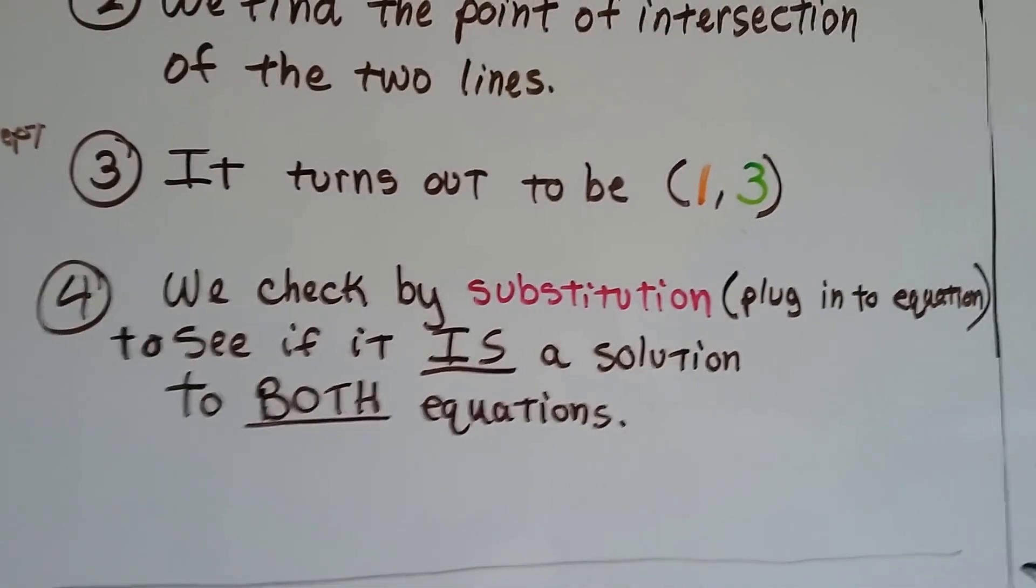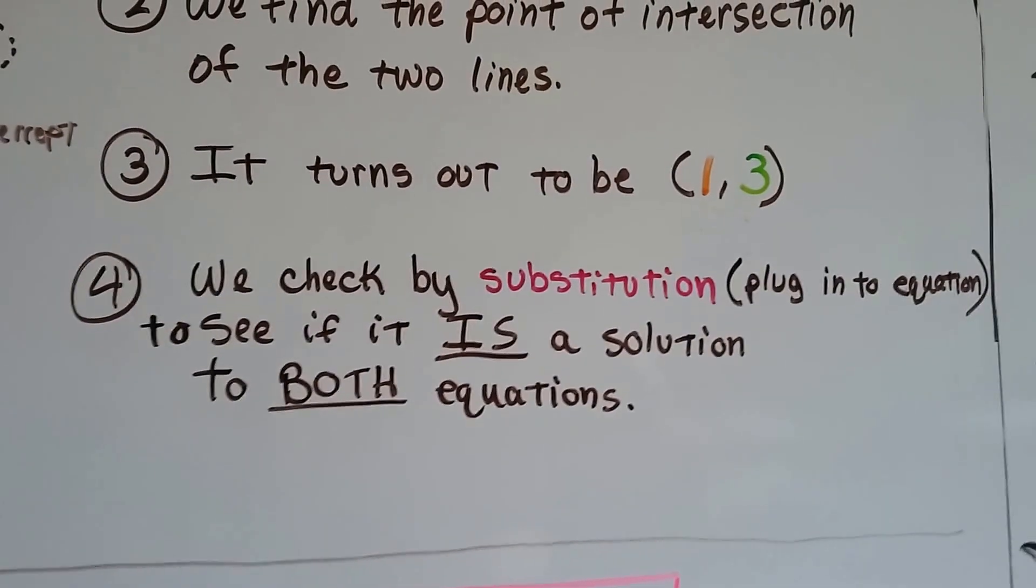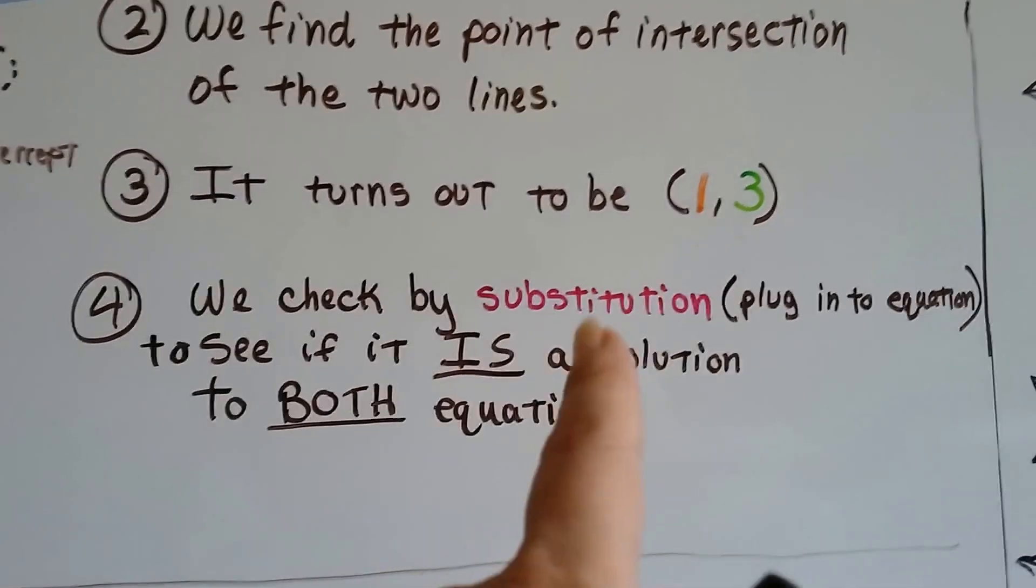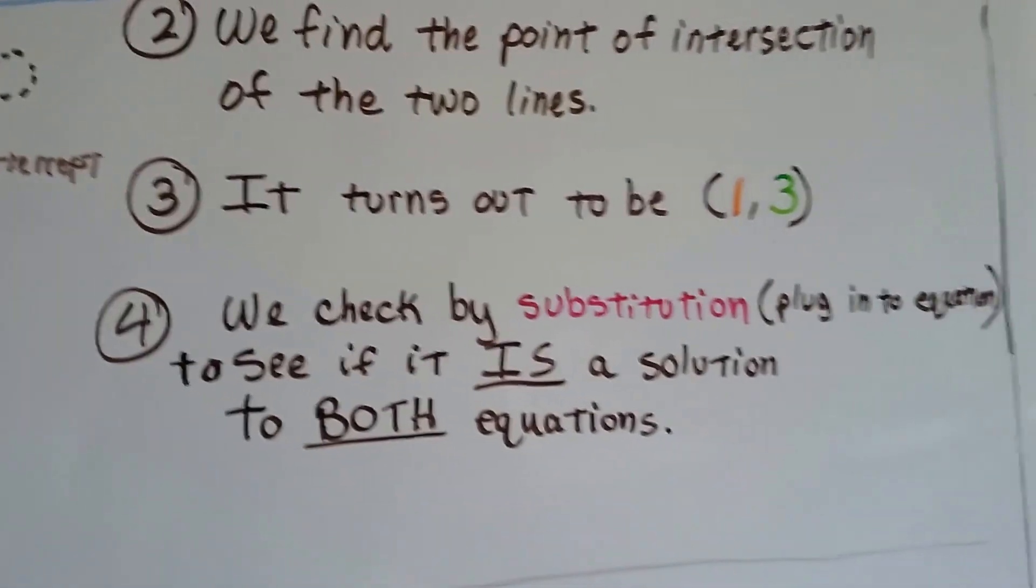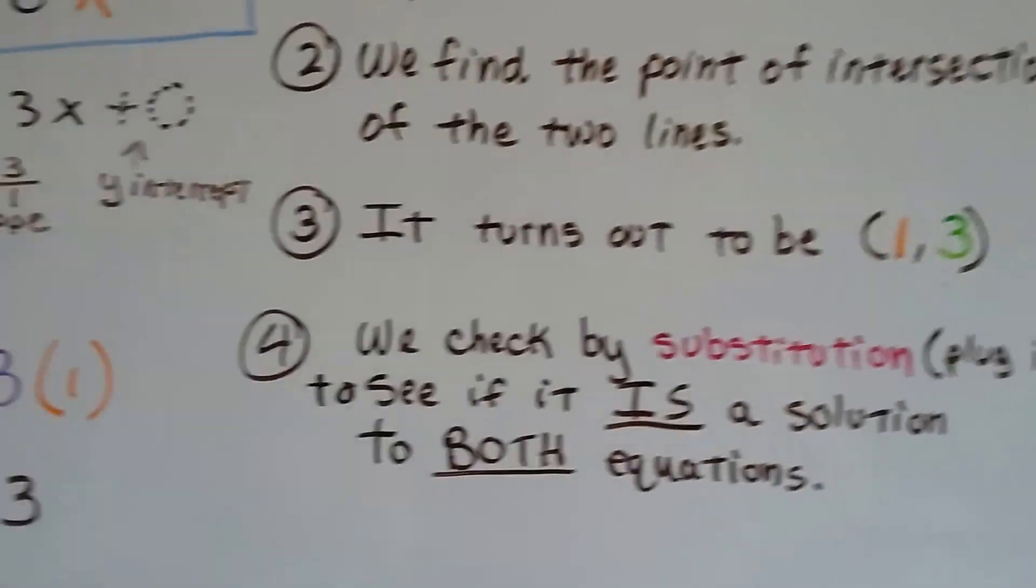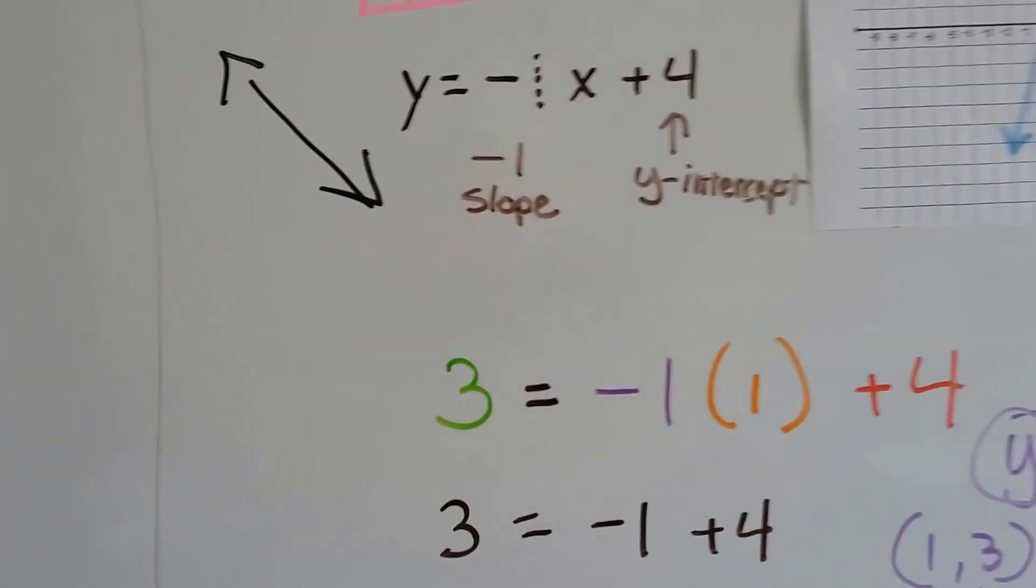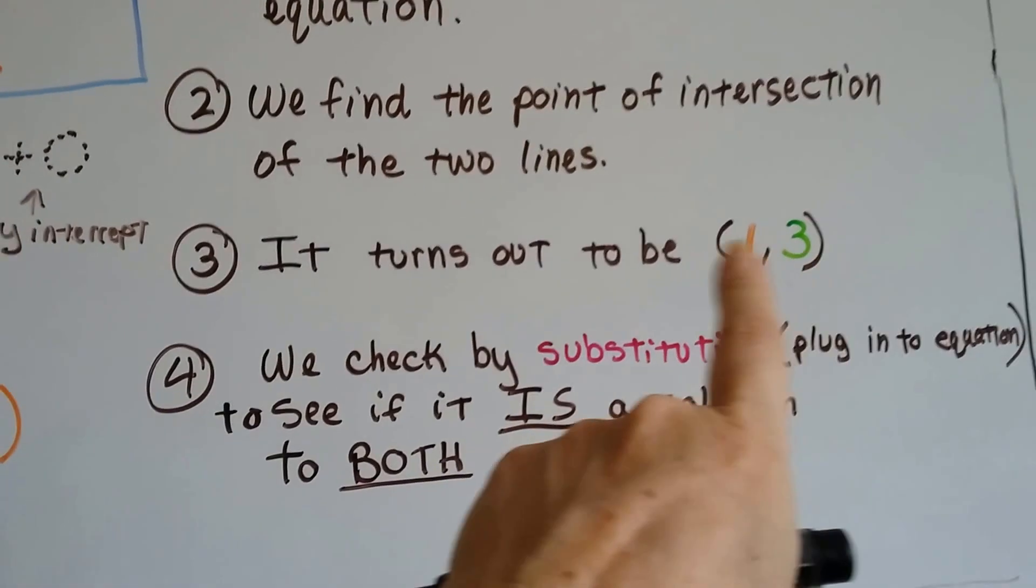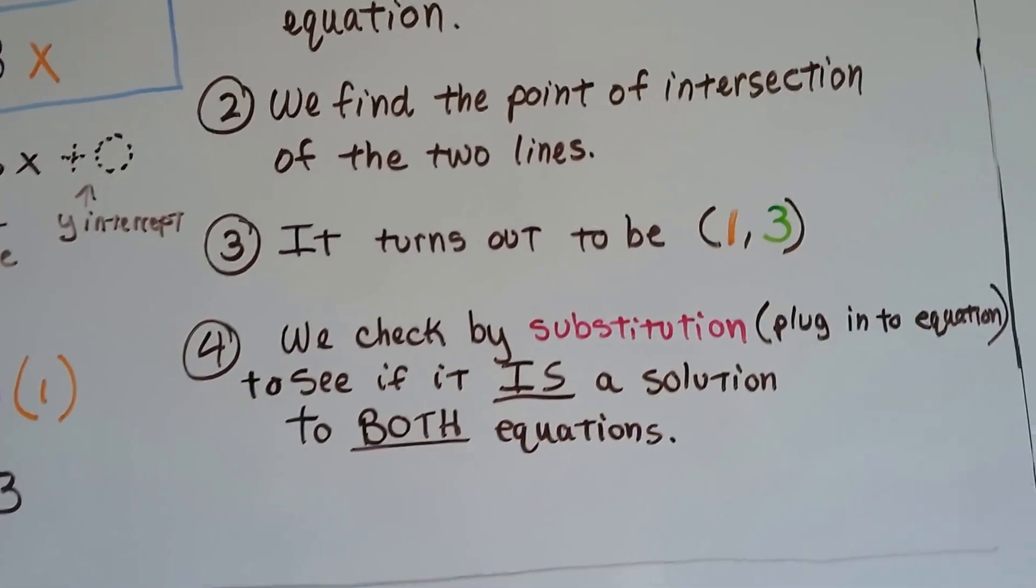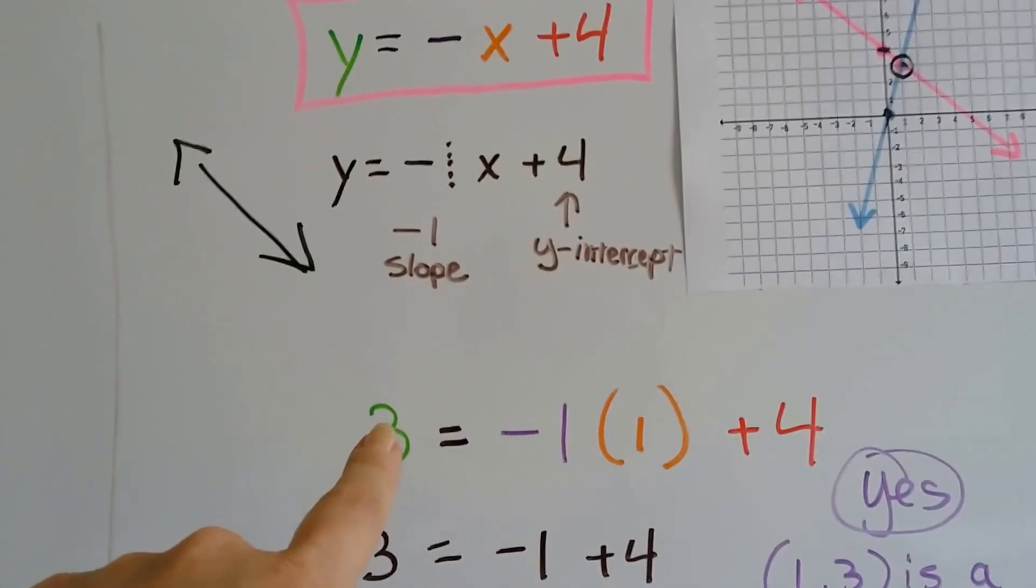We check by substitution. All that means is plugging it into the equation to see if it is a solution to both equations. Anytime you see substitution, it means take those numbers and plug it in. You substitute it for the variables. So let's do the first one. Remember we've got that negative 1. If our ordered pair is 1, 3, X is 1 and 3 is the Y. Y is the first one, so that's 3.